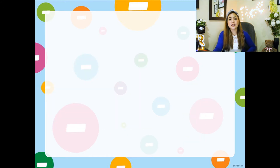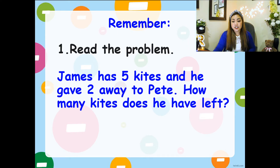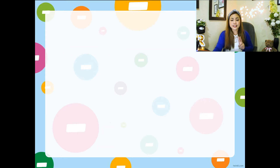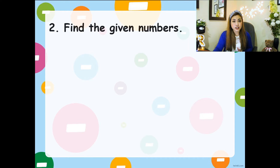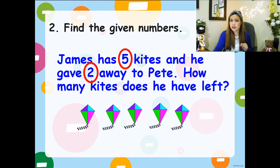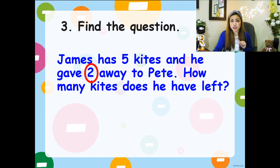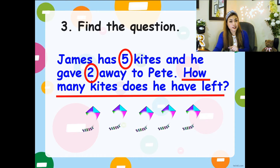Now let's go straight to how you are going to solve subtraction in word problems. Remember, first of all, you have to read the problem — just like addition, always read the problem. James has five kites and he gave two away to Pete. How many kites does he have left? Second step: you have to find the given numbers. I can see two and five. After that, we have to find the question. In this word problem, we've already found the given numbers, which are two and five. The question is: how many kites does he have left?